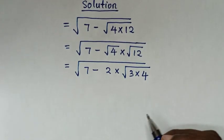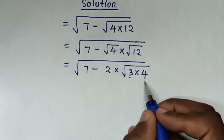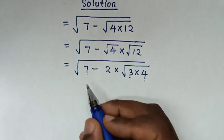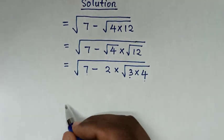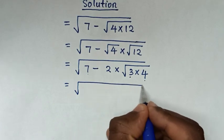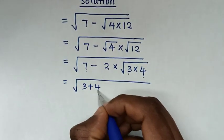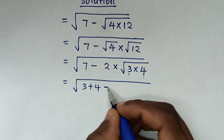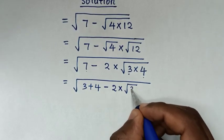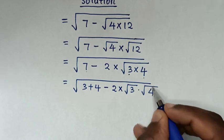In the next step, we have 3 and 4, and 7 is the same as 3 plus 4. So it will be equal to square root of (3 plus 4) minus 2 times square root of 3 times square root of 4.